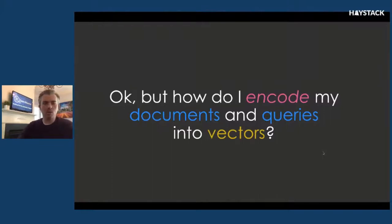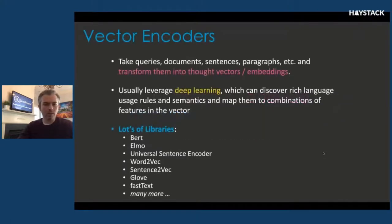Those are all fairly contrived examples using food items and attributes of food — that's not a real world application, and I also came up with those categories by hand. The question then becomes: how do I encode my documents and queries into vectors? That's where vector encoders come in. Vector encoders take queries, documents, document sentences, paragraphs, et cetera, and transform them into thought vectors or embeddings. They usually leverage deep learning, which can discover rich language usage rules and semantics, and map them to combinations of features in the vector.